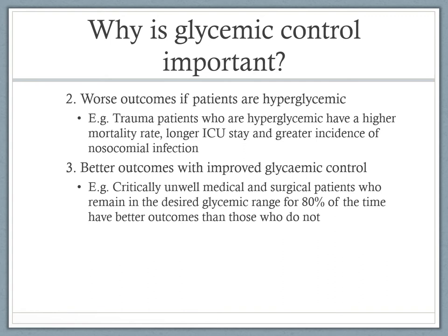There are worse outcomes if a patient is persistently hyperglycemic. For example, trauma patients who are hyperglycemic have a higher mortality rate, longer ICU stays, and a greater incidence of nosocomial infections. On the flip side, critically unwell medical and surgical patients who remain within the desired glycemic range for 80% of their admission have better outcomes than those who do not. There is good evidence for controlling hyperglycemia to achieve better patient outcomes.